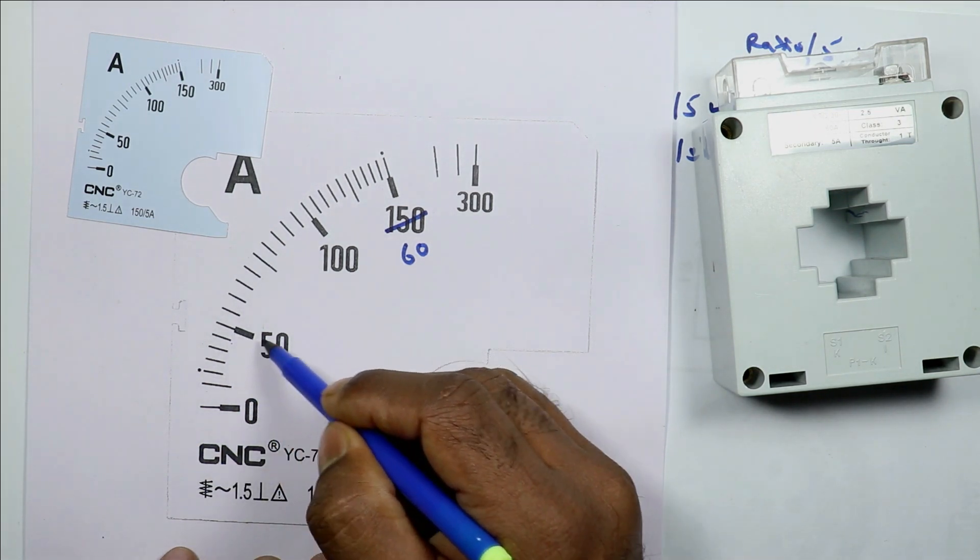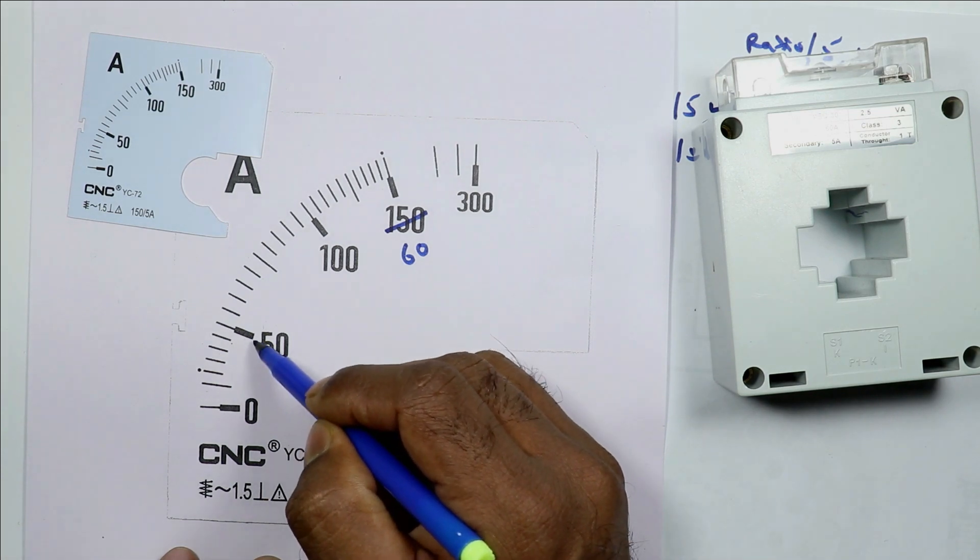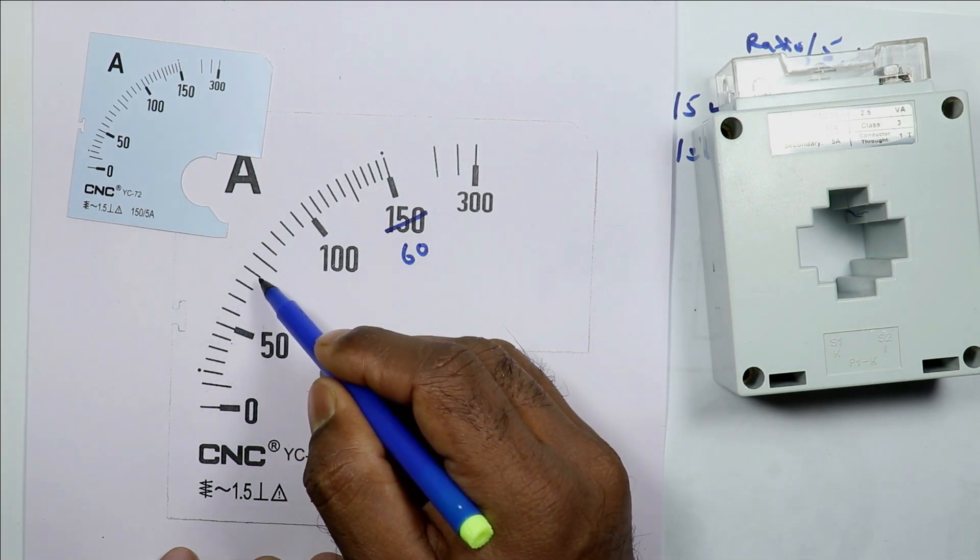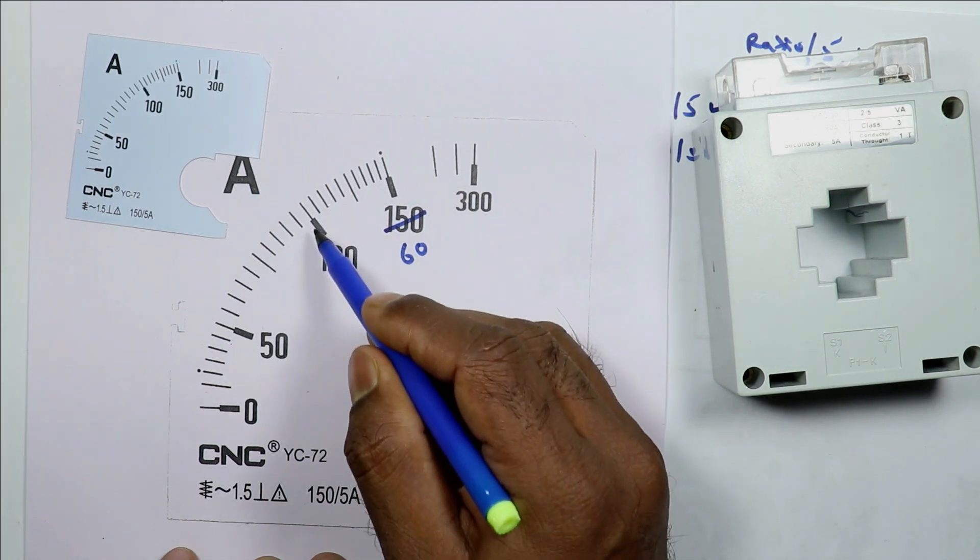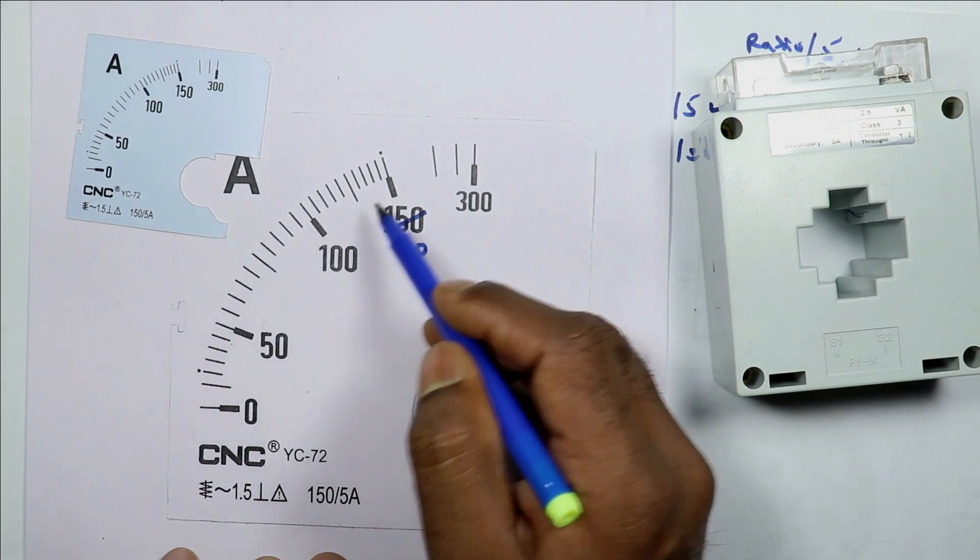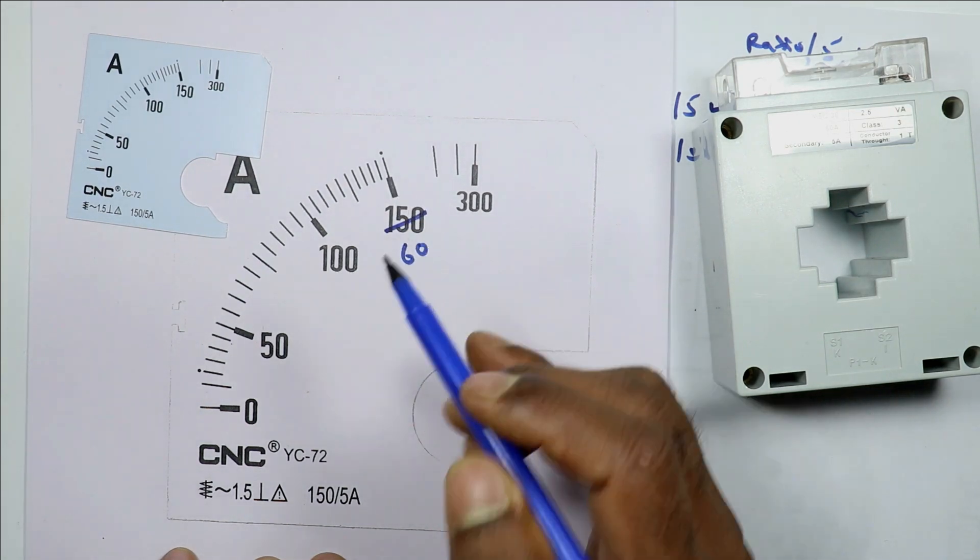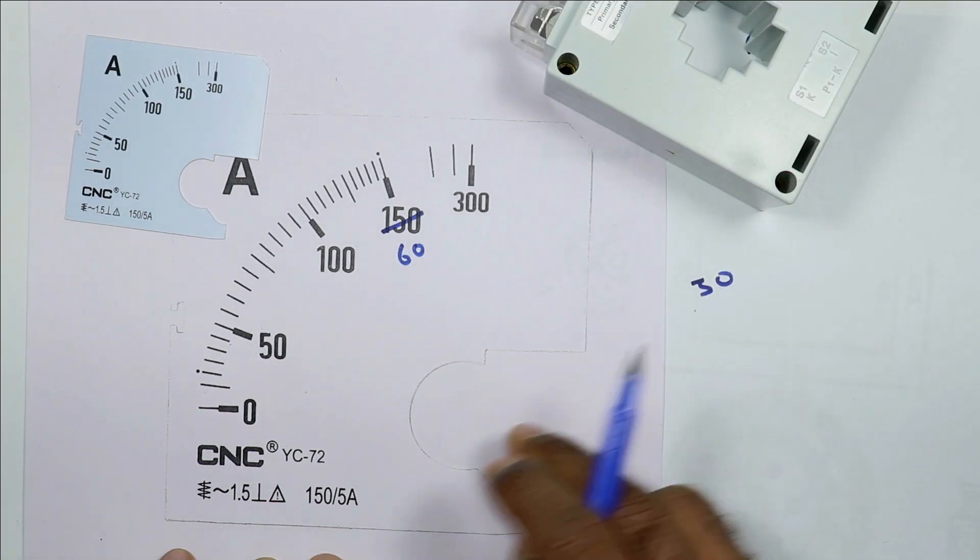Counting continues: 6, 7, 8, 9, 10. Till here total 10 lines are there. Continuing to count, at 20th line 100 ampere is there. Similarly at 30, 150 ampere. So total 30 lines are there.